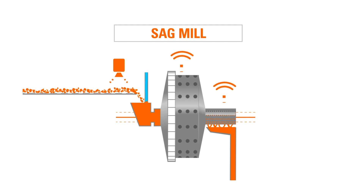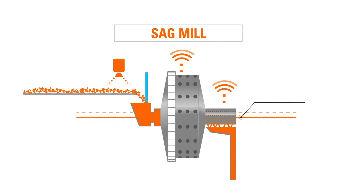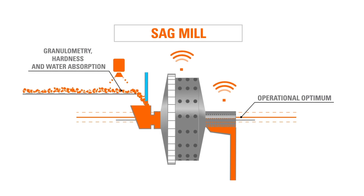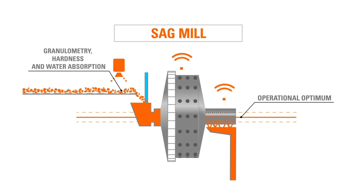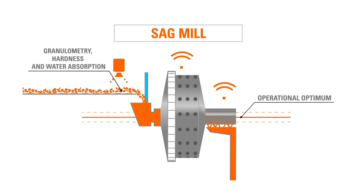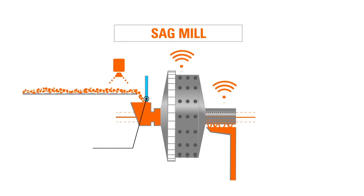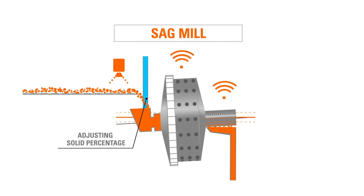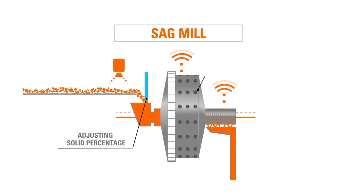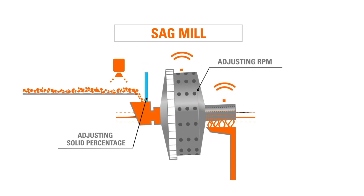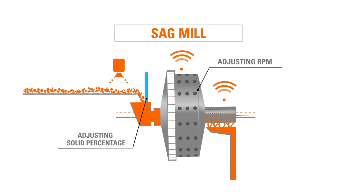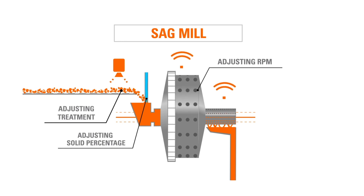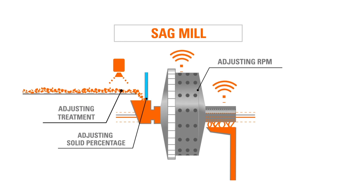SAG mill. A key requirement in this stage of the process is identifying the optimum operational parameter depending on the granulometry, hardness, and water absorption of the material fed to the mill. Process stability maintenance: adjusting the percentages of solids in the mill, ensuring the transportation of fine material; adjusting the mill rotation RPM, ensuring energy for ore fragmentation; and adjusting the treatment to keep the mill within the optimum operation range.